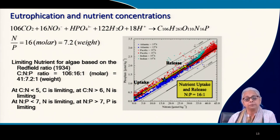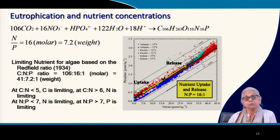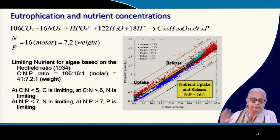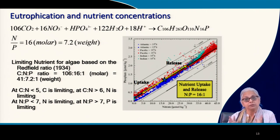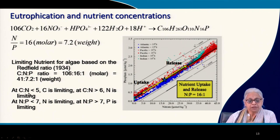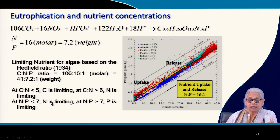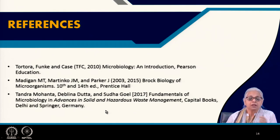This is a well-known concept: the rate of nutrient uptake and release is the Redfield ratio, and these are the growth-limiting nutrients for algae or phytoplankton in the oceans. With a carbon-to-nitrogen ratio less than 5, carbon would be limiting; at C/N ratios greater than 6, nitrogen would be limiting; for N:P ratios less than 7, nitrogen would be limiting, and otherwise phosphate would be limiting. This brings us to the end of this topic. Thank you.